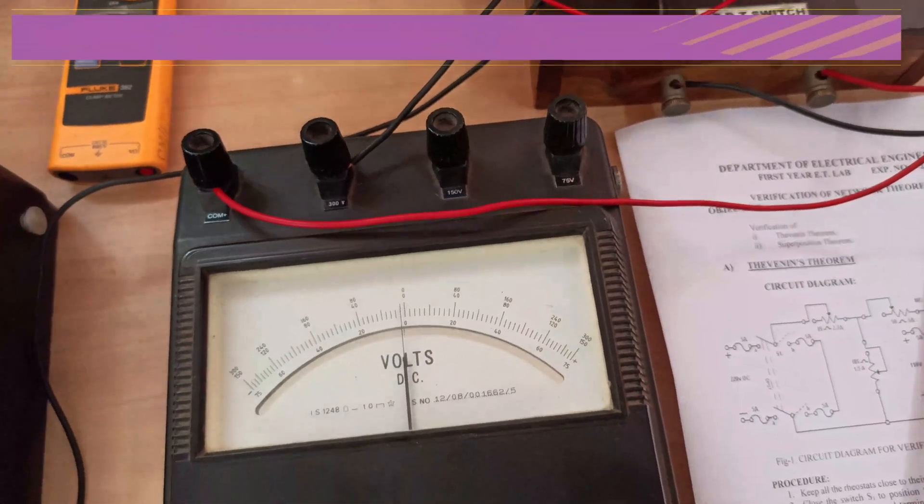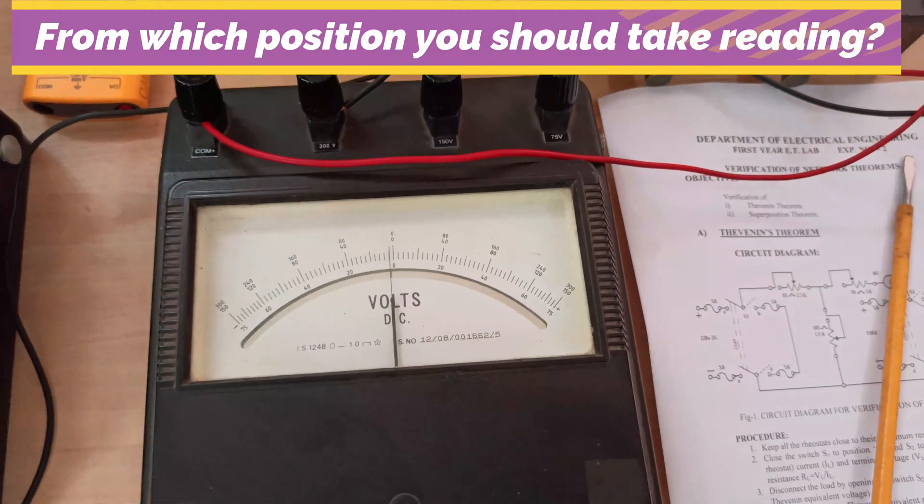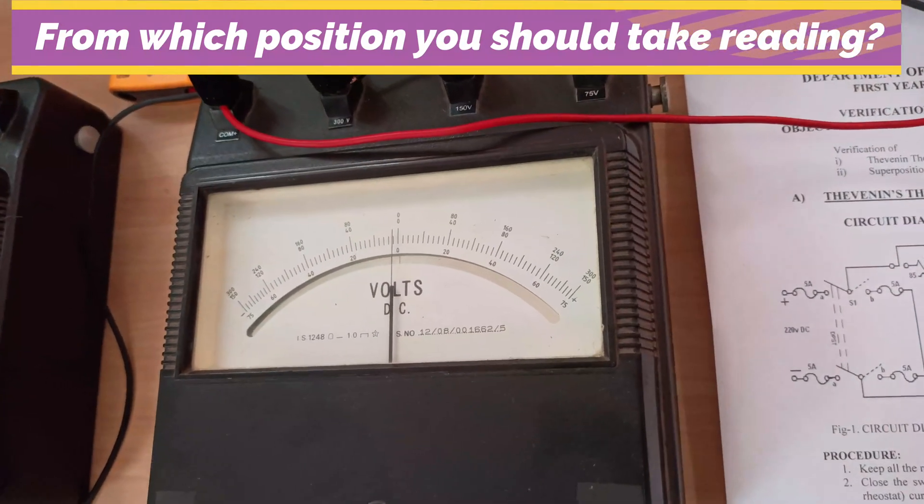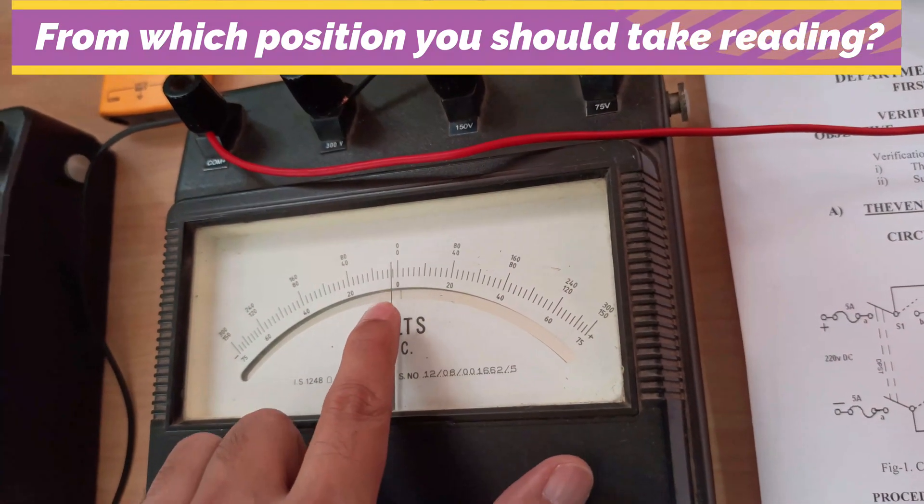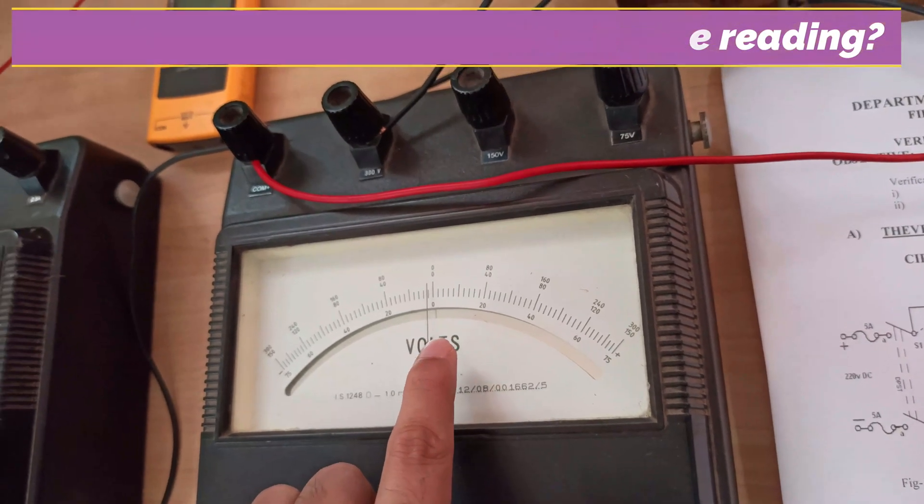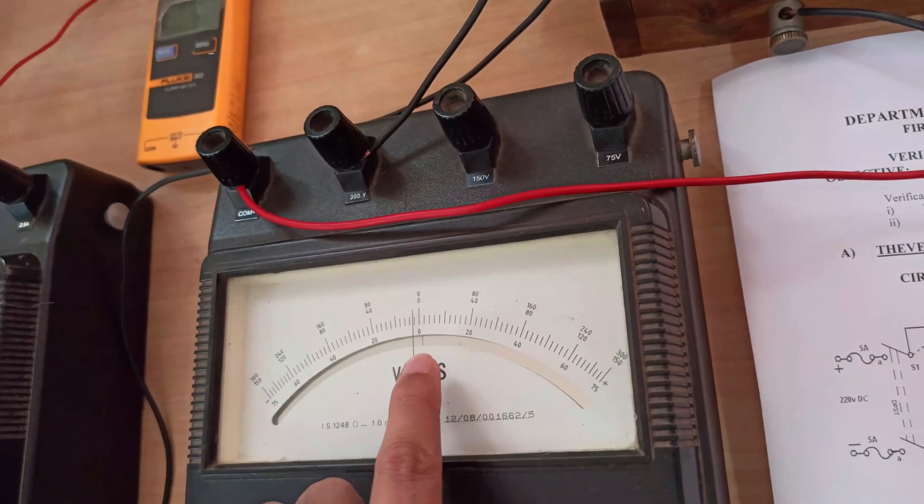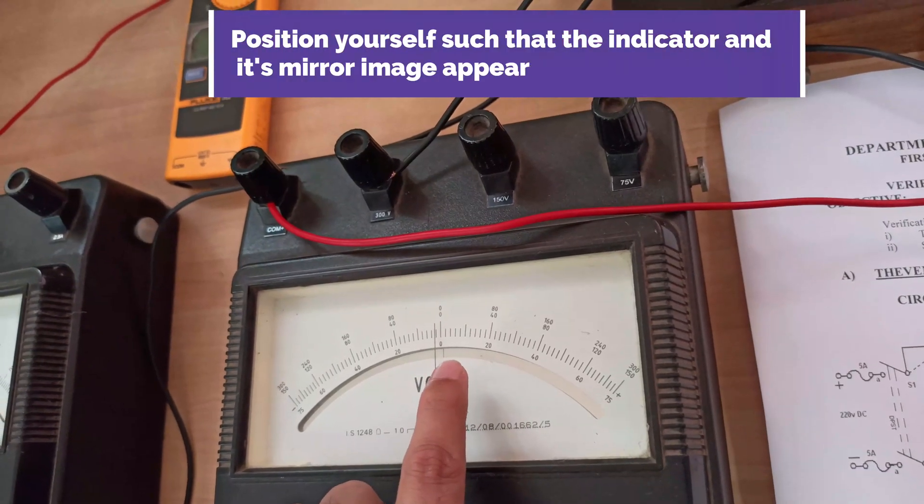Now, from what position you have to note the readings? To do that, one thing you have to observe very closely is that this indicator on the top line you can see, and there is a mirror image just below that. You can see they are distinctly different, and that is not the correct position to take the result.